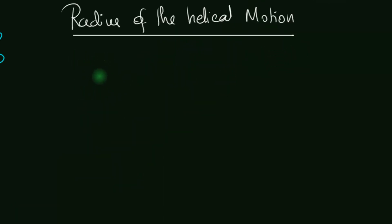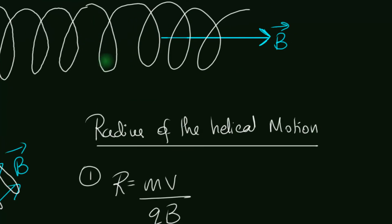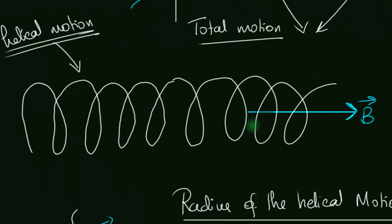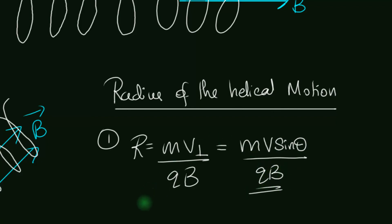Let's understand the characteristics of this helical motion. The radius is easy because we already know R = mv/qB for perpendicular velocity. Now the radius of circulation depends only on the perpendicular component, which is v sine theta. So R = mv sine theta / qB.